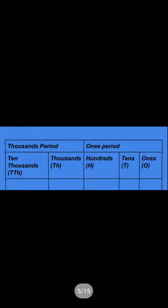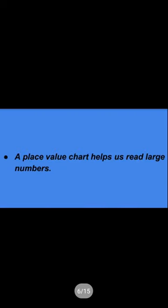Now you can see the place value chart. The first row shows the 1000s period and 1s period. Below the 1000s period there are 2 places: 10,000s and 1000s. So 10,000s and 1000s are included in the 1000s period, and 100s, 10s, and 1s are included in the 1s period. A place value chart helps us read large numbers.